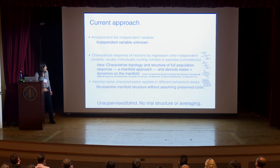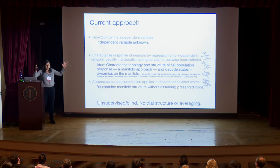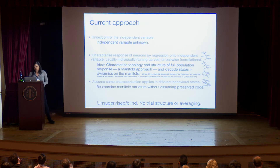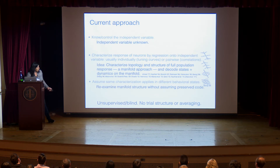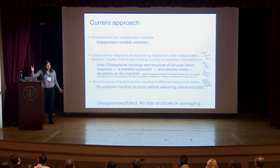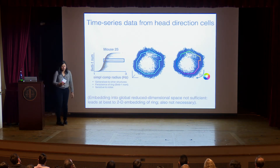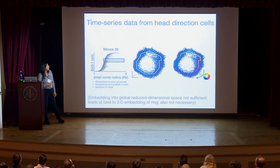This manifold-based approach allows unsupervised discovery of coded information in brain states, with no need for trial structure or averaging across time. Instead of assuming the same characterization applies in different behavioral states, we examine the manifold structure of the data, extract information from it, parametrize the manifold, and then do the same across different states without assuming that the coding is preserved. We apply this concept of manifold-based decoding to data from cells in the head direction circuit.